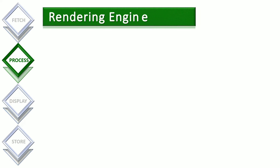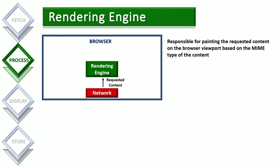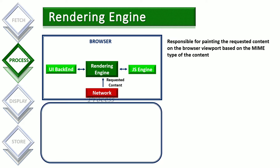Once we receive resources from the server, they need to be processed. The network layer will send the server response to the rendering engine. The rendering engine is responsible for painting the response of the server based on the MIME type of the content. The rendering engine works together with the JavaScript engine and UI backend to process the data. A key part of the rendering engine is the HTML parser.